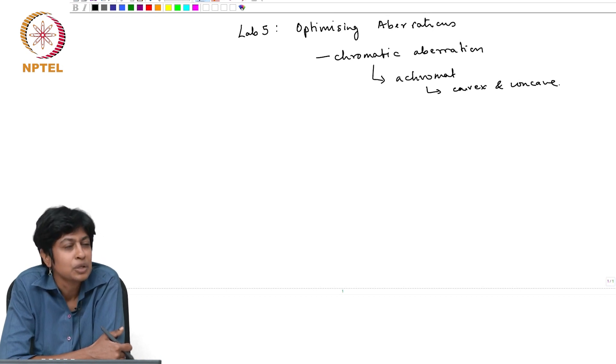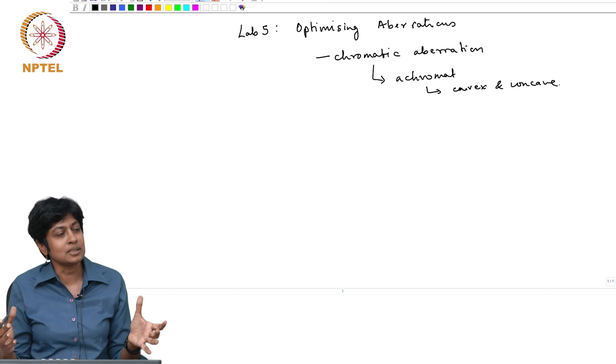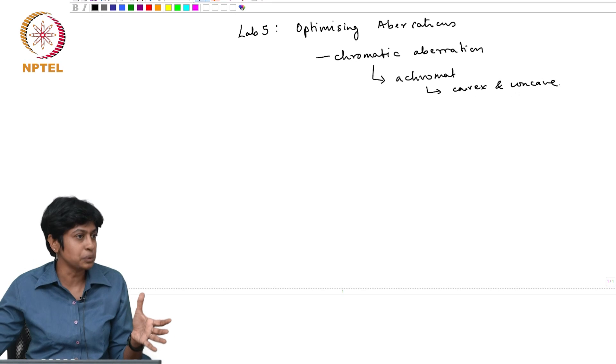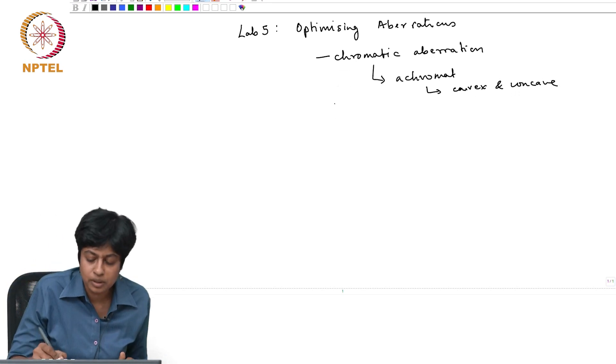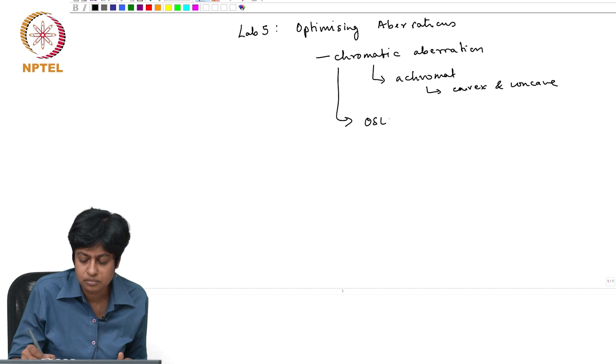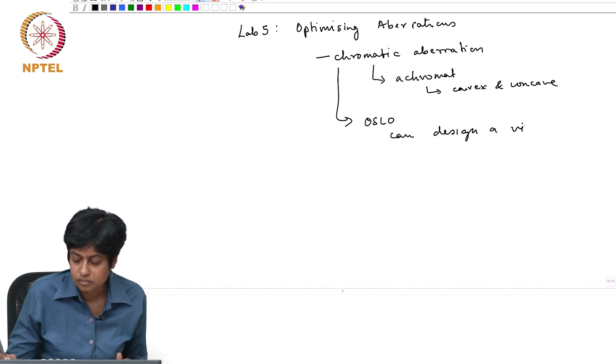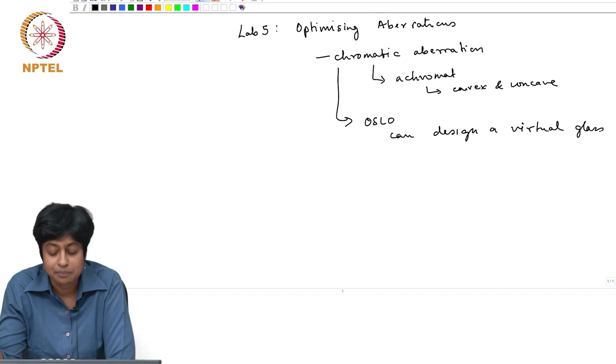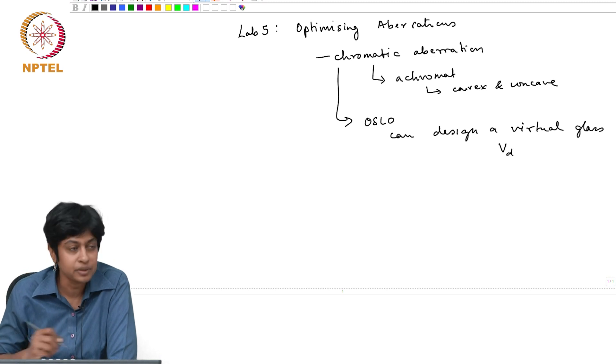So what does that mean? You will set up your optical system such that you virtually design, you design a virtual glass. Oslo has the ability to do this. What do I mean by a virtual glass? Now, you should know that when I say a different type of glass I am really talking about the V number of that glass, and the V number itself is a function of different refractive indices.